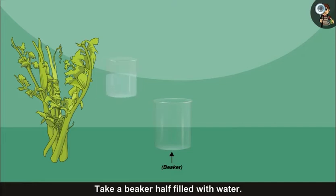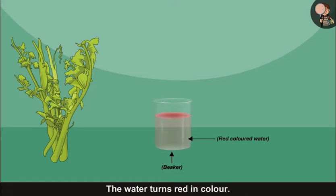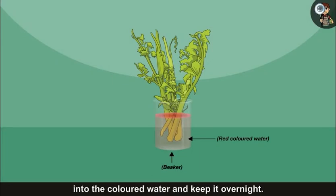Take a beaker half filled with water. Add two drops of eosin to the water. The water turns red in color. Now, immerse the twig of the plant into the colored water and keep it overnight.